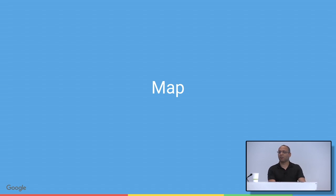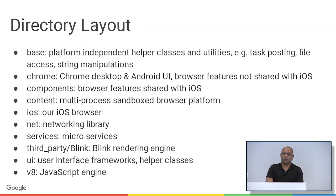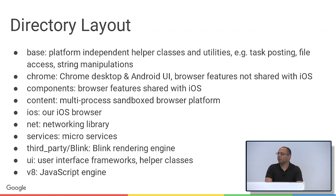Lastly, a quick overview of the directory structure: 'base' has file and string utilities. 'chrome' is our product on desktop and mobile, other than iOS which is in source/ios. 'components' has the layered components shared between desktop and iOS. 'content' is our low-level web platform engine. 'net' is our low-level networking library. 'services' is where microservices go. 'blink' is our rendering engine. 'ui' has the frameworks for creating browser UI outside the content area. And 'v8' is our JavaScript engine.